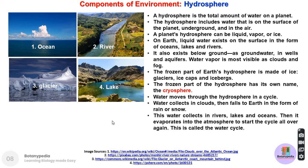Water moves through the hydrosphere in a cycle known as the water cycle. Water collects in clouds and then falls on the Earth as rain or snow. There is a continuous cycling of water molecules in different forms — liquid, gas, or solid — and this water cycle helps maintain the flow of water to different parts of Earth.